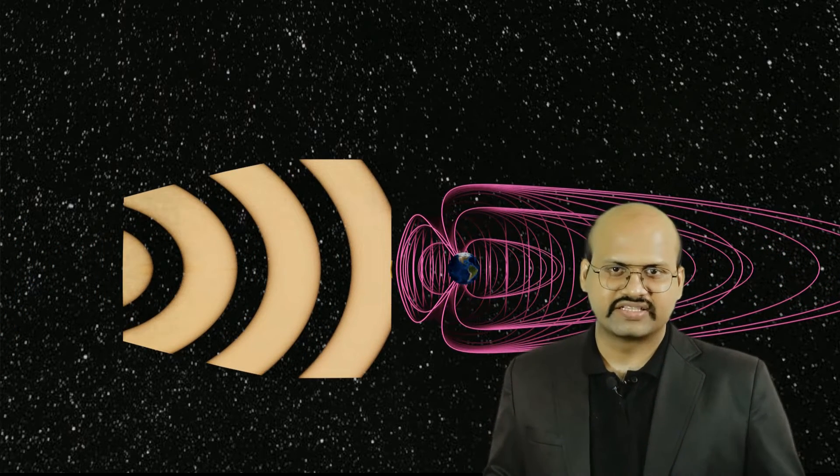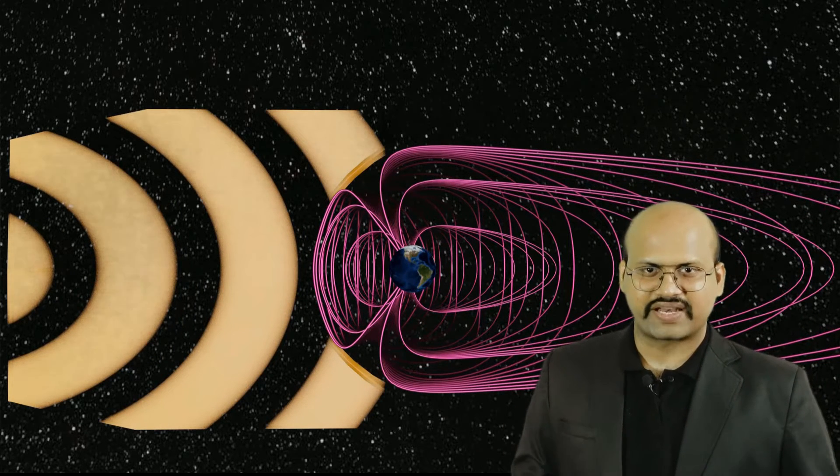The sun discharges lots of charged particles into space. These charged particles can include ions, electrons, protons, and other things. When these charged particles reach our Earth, we are protected by the magnetic field. Because of the magnetic field, the charged particles are not able to reach our Earth directly.